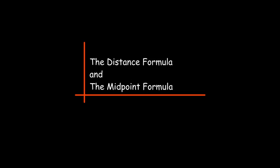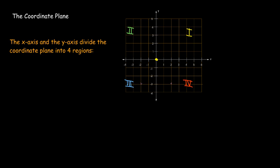Let's do a quick review about the coordinate plane. We have an x and y axis, and given the x and y axis we can always identify any point based on its coordinates — the x coordinate first and the y coordinate second.